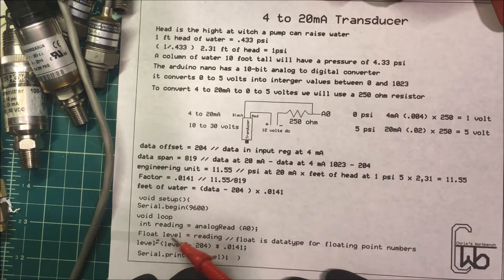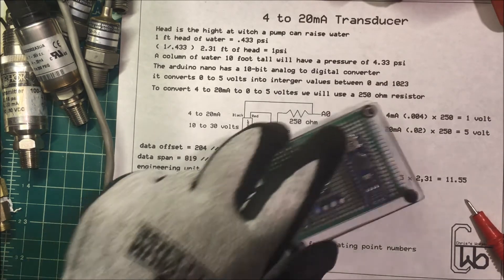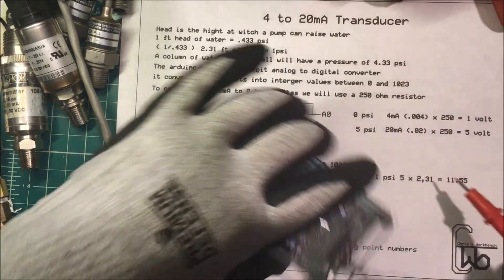So the reading is equal to the level, and then I take the level is going to be equal to the level minus 204 times 0.0141, and then I'm just going to read that out onto the monitor. Now I made up a unit here to do this. This is the top of the unit.